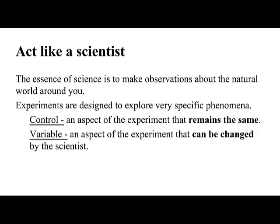One way they design experiments is with a control, which is an aspect of the experiment that remains the same throughout. They do not allow it to be changed. A variable, on the other hand, is an aspect that can be changed by the scientist. It's a characteristic we're interested in seeing if it has an effect on the natural world.